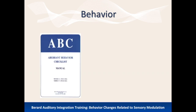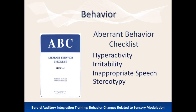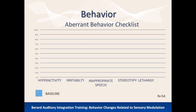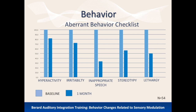The Aberrant Behavior Checklist (ABC) was used to measure change in behavioral problems such as hyperactivity, irritability, inappropriate speech, stereotypy, and lethargy. The 54 subjects were evaluated to obtain base scores before participating in Berard AIT. After Berard AIT, these challenging behaviors reduced on all five factors. Most changes occurred within one month of intervention and were maintained at three and six months.